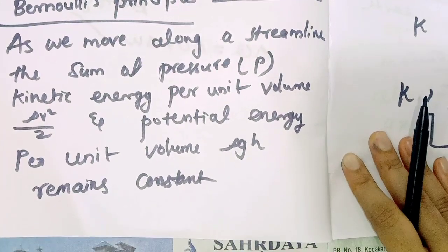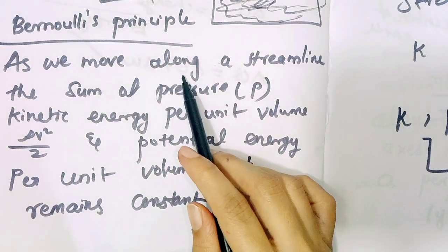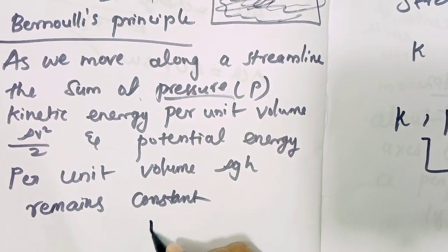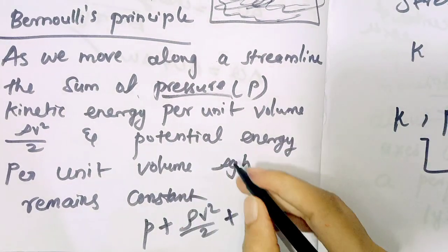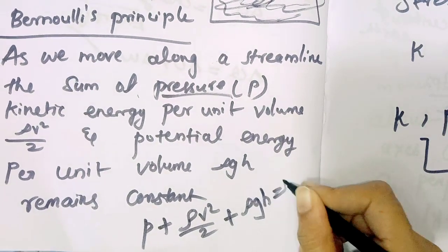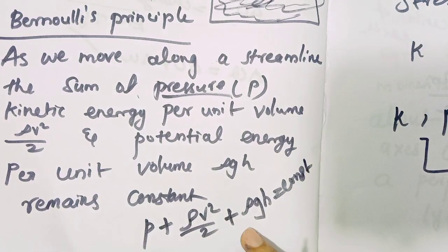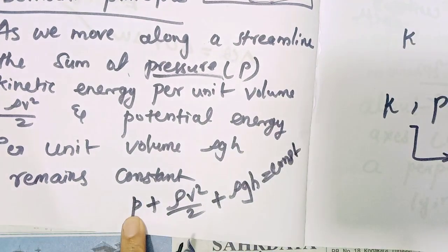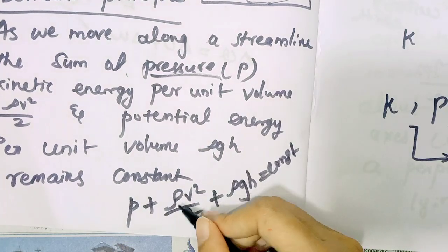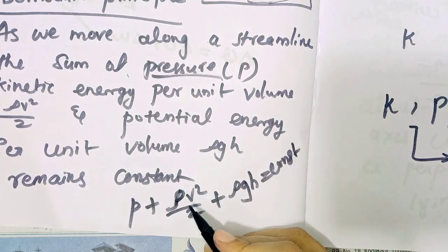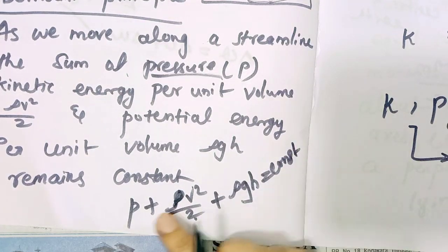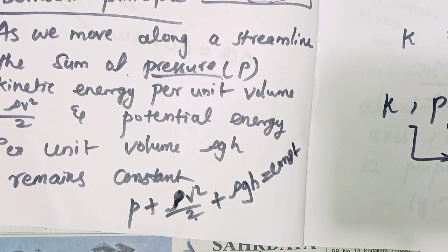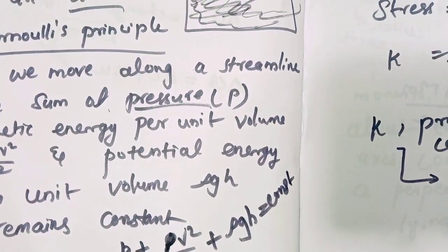Bernoulli's Principle is very important. As we move along a streamline, the sum of pressure, kinetic energy per unit volume (ρv²/2), plus potential energy per unit volume (ρgh) is constant. We have an equation for Bernoulli's Principle: pressure plus ρv²/2 plus ρgh equals constant.